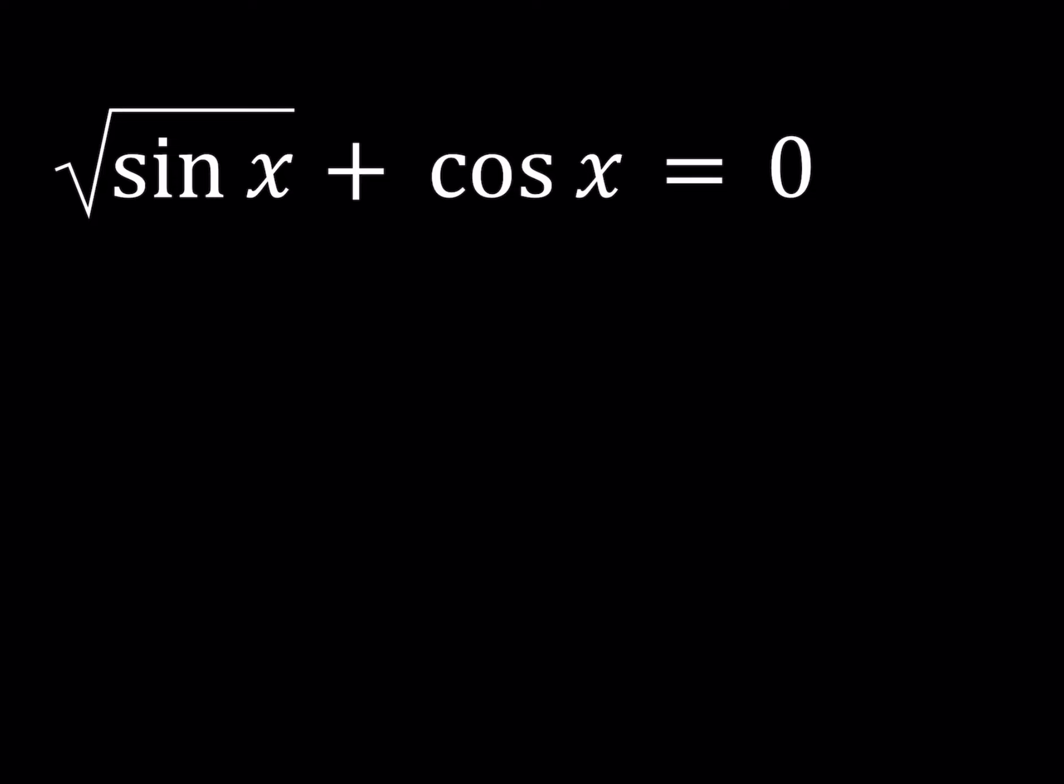First of all, a couple of things to notice. We can isolate the square root here by subtracting cosine x from both sides.